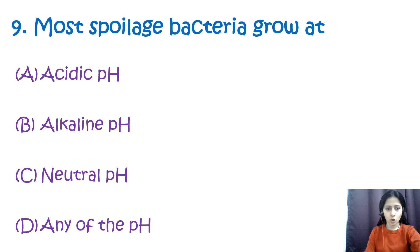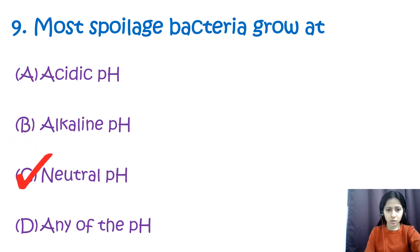Question number nine: most spoilage bacteria grow at option A: acidic pH, option B: alkaline pH, option C: neutral pH, and option D: any pH. Most spoilage bacteria grow at neutral pH — option C — which ranges from approximately pH 5 to pH 8.